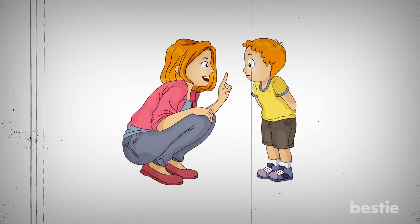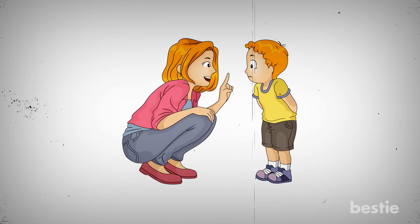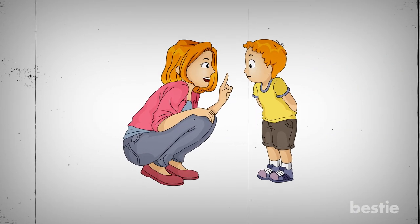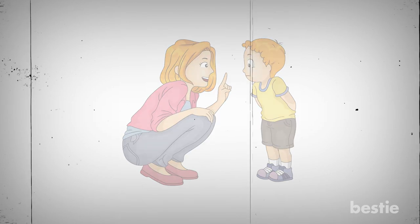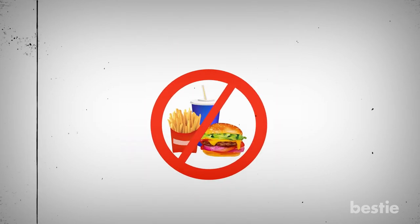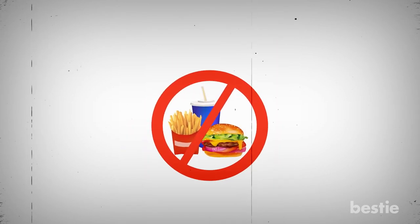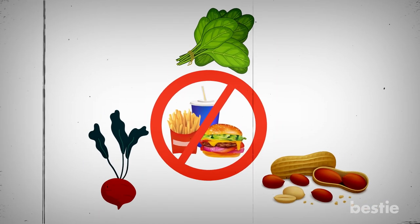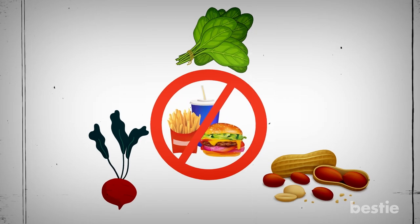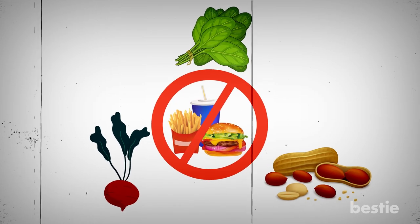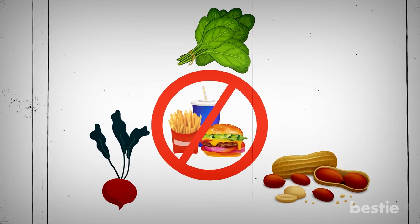So you know what to avoid — yup, your mom was correct in warning you about it. Not to worry though, we aren't only banning your fast food favourites. Even beets, spinach, and peanuts are oxalate-rich.